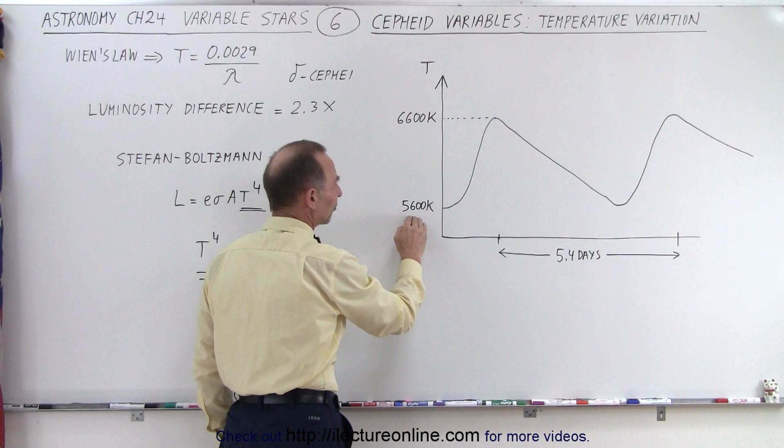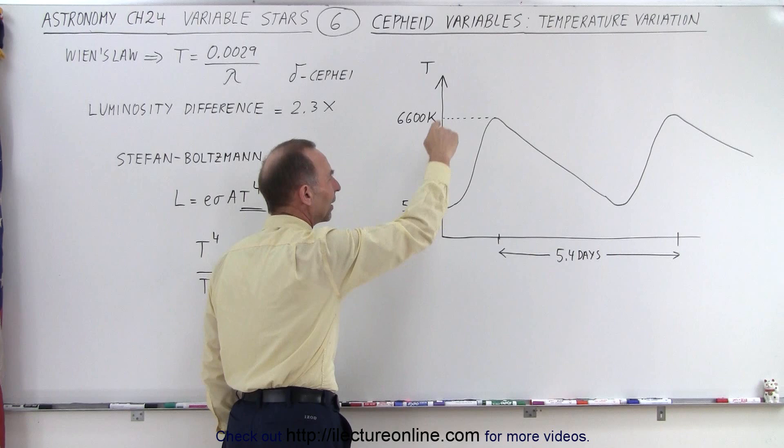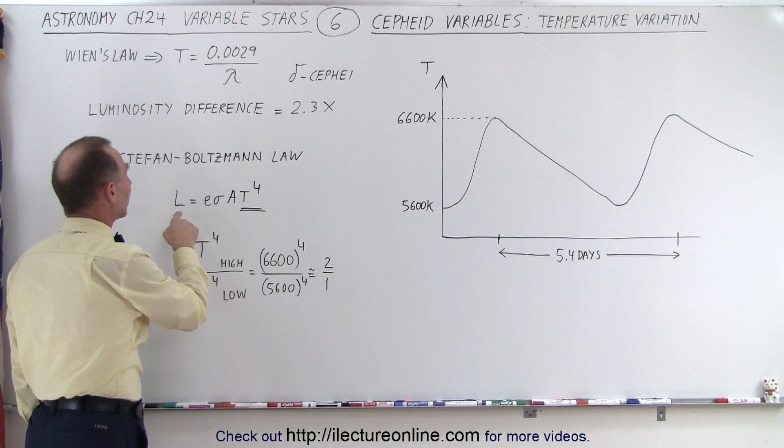And from that, we were able to establish that the temperature varied from about 5,600 Kelvin on its surface to 6,600 Kelvin and back down as it varied in brightness.